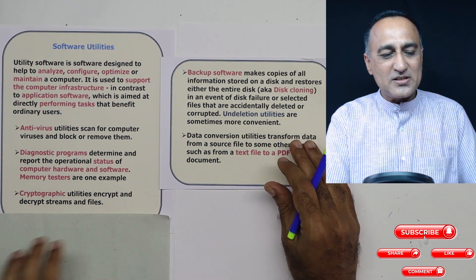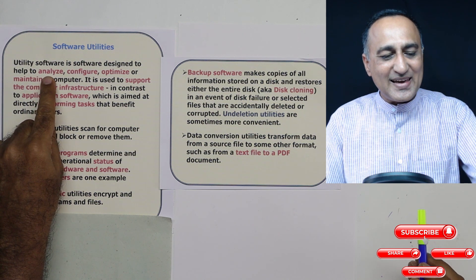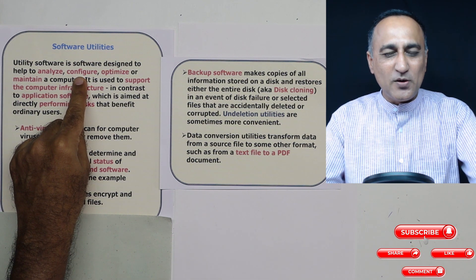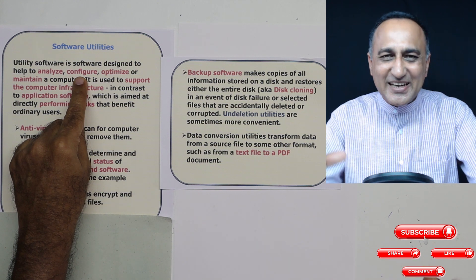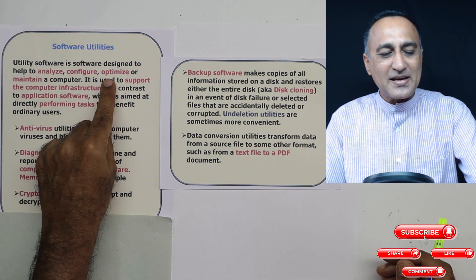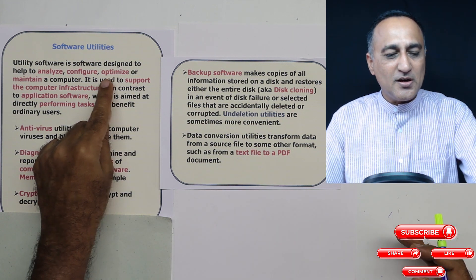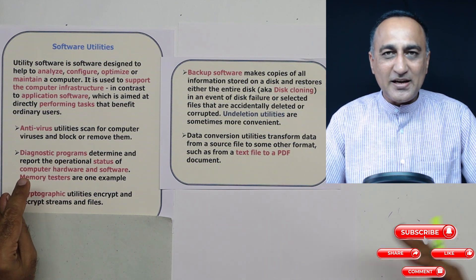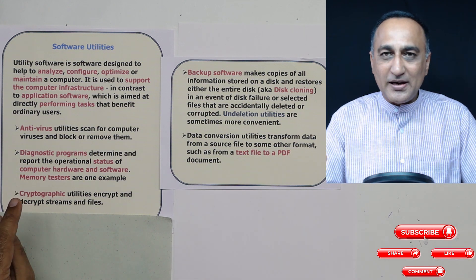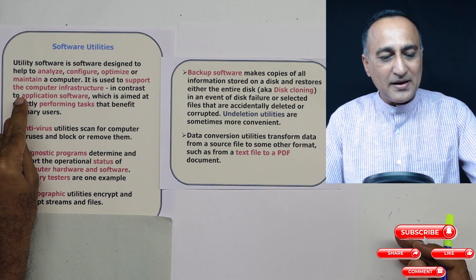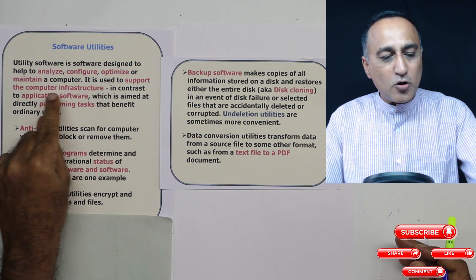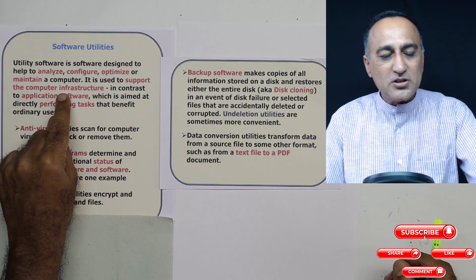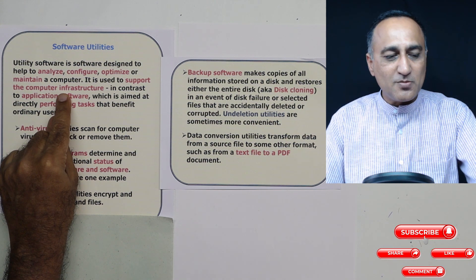So let me summarize what a utility is. A utility is software that helps you analyze — like diagnostic software. Configure means to set up something. Optimize means you want to remove waste space or waste storage in your machine. Maintain means you want to check your memory, delete waste files, delete unused files, delete files downloaded from the internet. So it is used to support your computer work — it does not do any specific direct application for you, nor is it system software. It helps you use the computer more effectively.